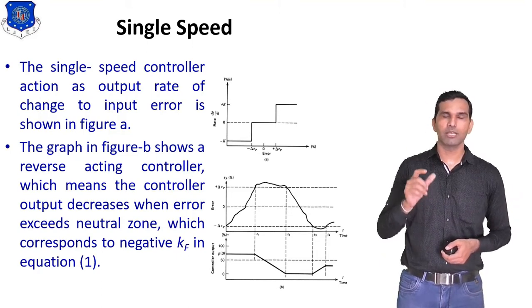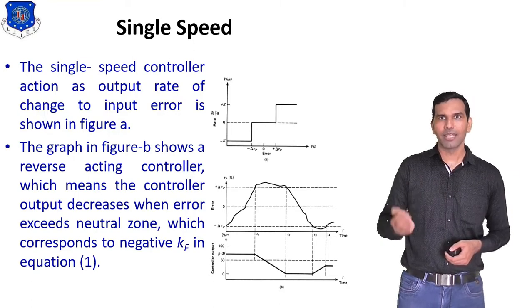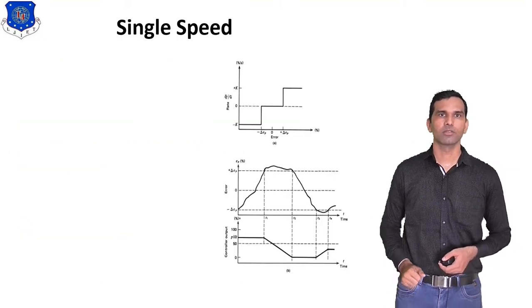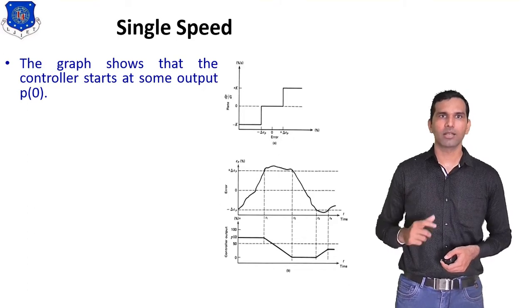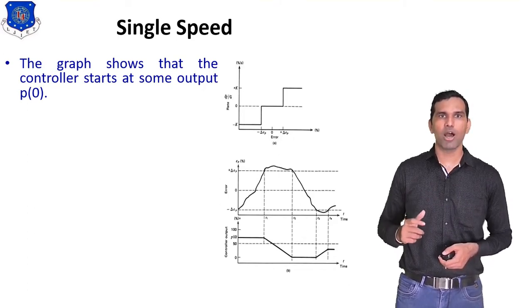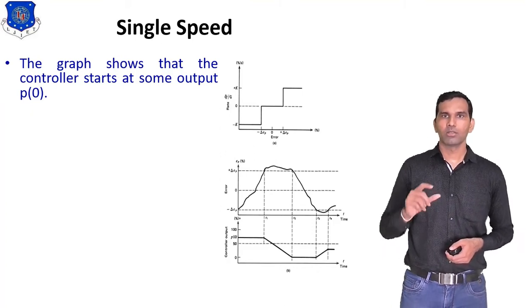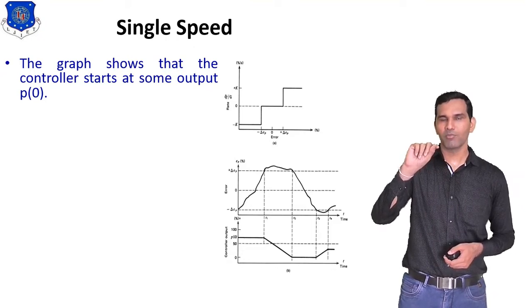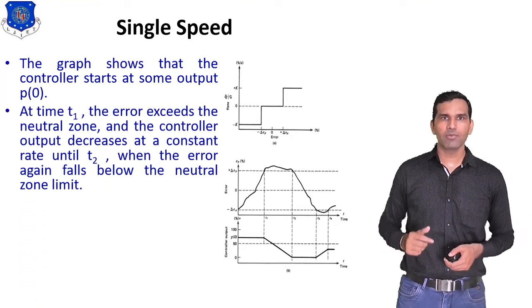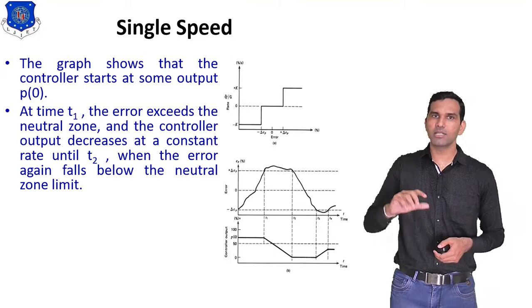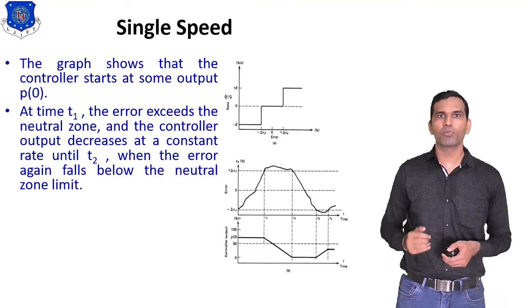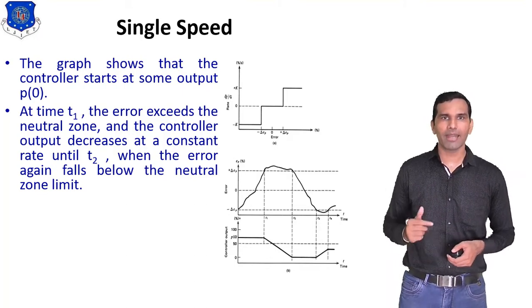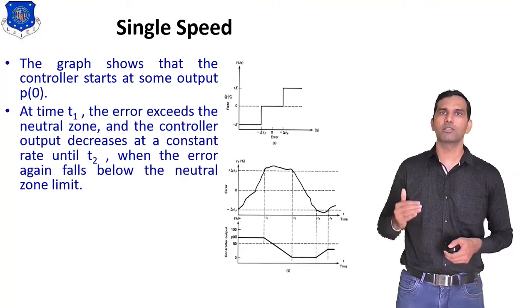In reverse action, when error is increased, the controller output is decreased. The graph shows that the controller starts at some output p₀. At time t1, the error exceeds the neutral zone, and the control output decreases at a constant rate until t2, where the error again falls below the neutral zone limit.